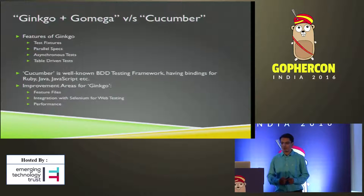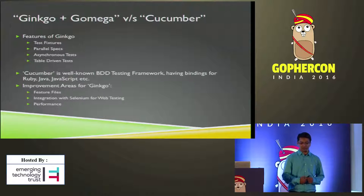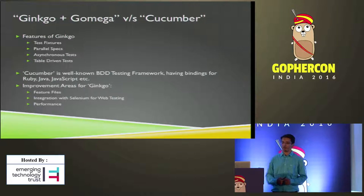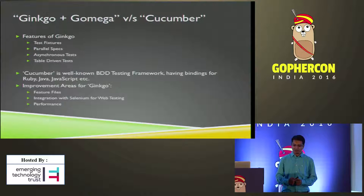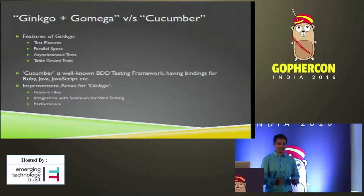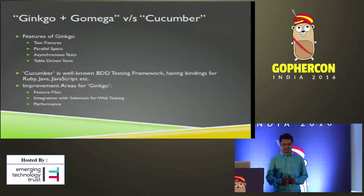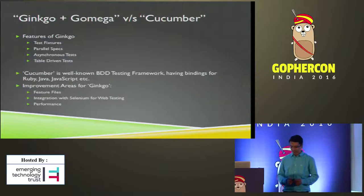A major drawback is no integration with Selenium for web testing. Selenium is essentially the only open-source tool we can use for web testing. Cucumber has its own integration with Selenium. In Golang, we do have a few Selenium bindings, but they are still not integrated with Ginkgo or any BDD testing framework, and whatever Selenium bindings exist are not full-fledged — they are still in early stages. And as mentioned, performance is an issue, which we'll see later.